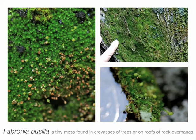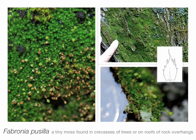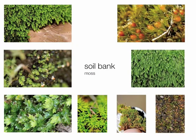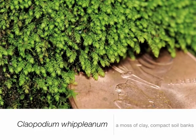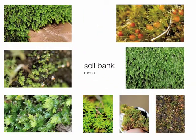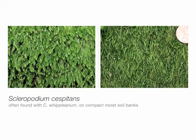This is Fabronia pusilla — a tiny pleurocarp with chalice-shaped sporophytes and a silvery appearance due to ciliate projections along the leaf margin. Moving along on our hike, we come upon a shaded soil bank. On a soil slope you would likely encounter Claopodium whippleanum — the 'clay' is in the name — and it has chain-like stems. Often co-occurring with it is Scleropodium cespitans, which is an unresolved species with potentially more than one species currently called by that name.